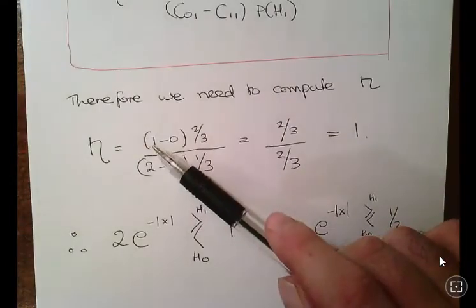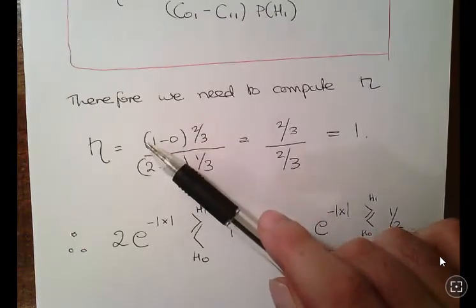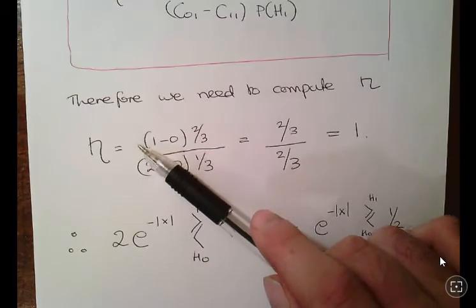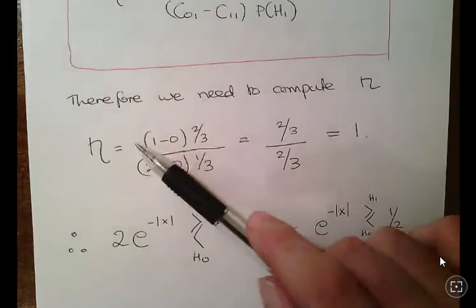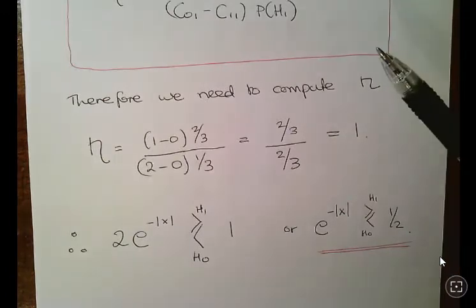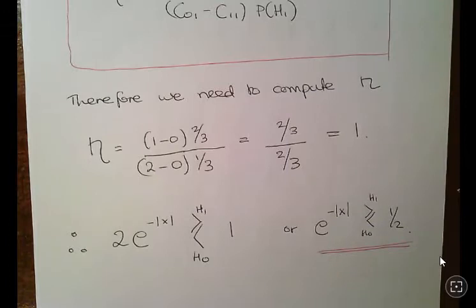So C01 minus C11 times the probability of H1. And again it starts with a zero but most of the ones are favored in the numerator, just remember that. So we get two-thirds over two-thirds which is equal to one.